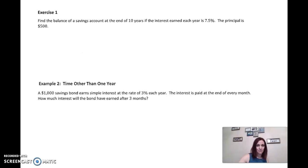Okay. Find the balance. Now remember, balance is going to be total. That's where we're going to find the interest and we're going to add it back onto our principal. So it says 10 years. That's going to be T. And we have 7.5%. That's our R.